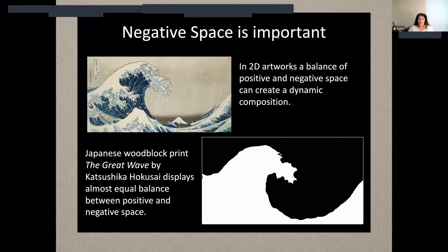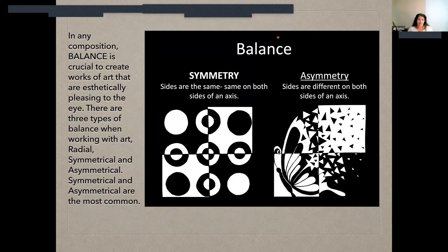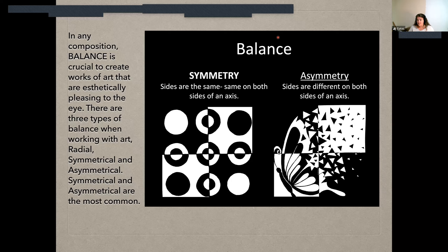When we're talking about balance in art, in any composition balance is crucial to create works of art that are aesthetically pleasing to the eye. There are three kinds of balance that artists work with: radial balance, symmetrical, and asymmetrical balance. Symmetrical and asymmetrical are the most common. Radial balance is when you are dealing with creating a piece of artwork that is round in shape.